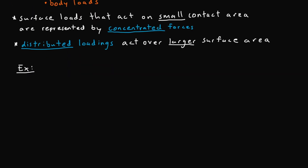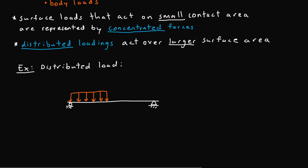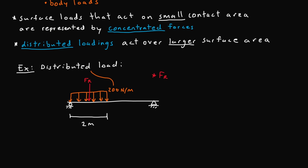Taking a look at an example of a distributed load: we have a simply supported beam with a distributed load on the left side of 200 newtons per meter. This distributed load can be broken down to a resultant force right down the middle. If the length of the distributed load is 2 meters, then our resultant force FR equals 200 N/m times 2 m, which becomes 400 newtons.